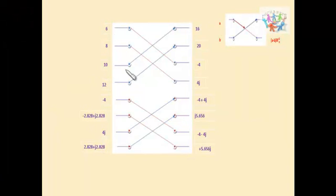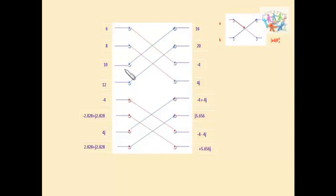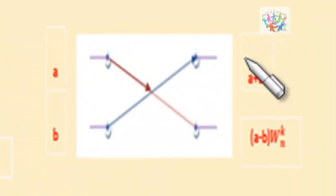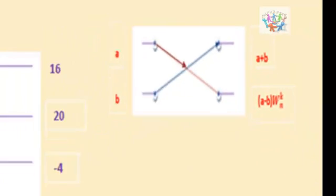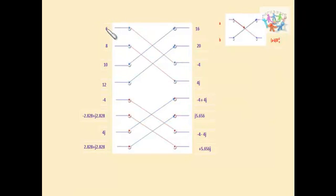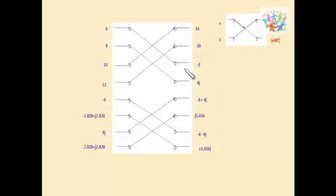The output of stage 1 is taken as input for stage 2. Write the twiddle factors W4⁰ and W4¹ at the bottom of each X. Using the same DIF method — top part A + B, bottom part (A − B) × twiddle factor — for the first X with values 6 and 10: top = 6 + 10 = 16; bottom = (6 − 10) × 1 = −4. Repeat for all remaining X's.